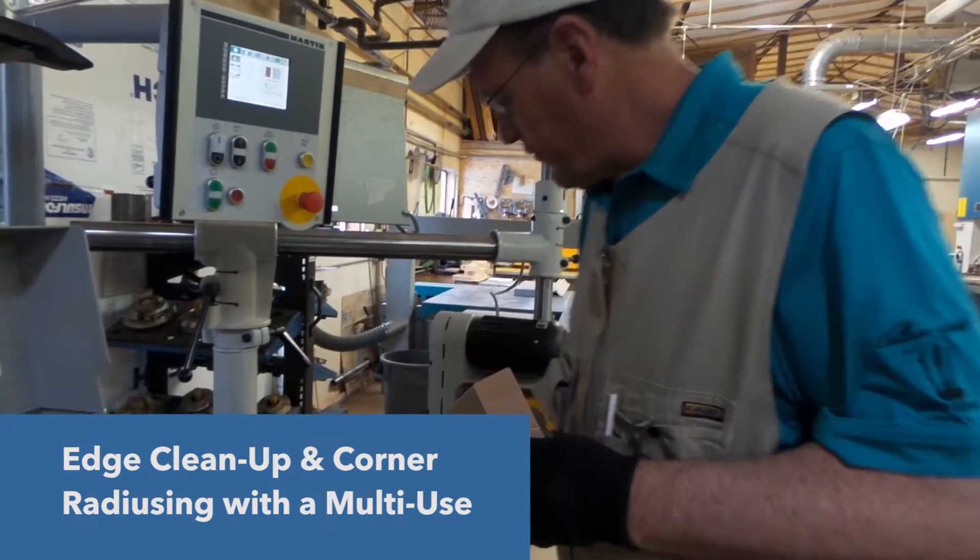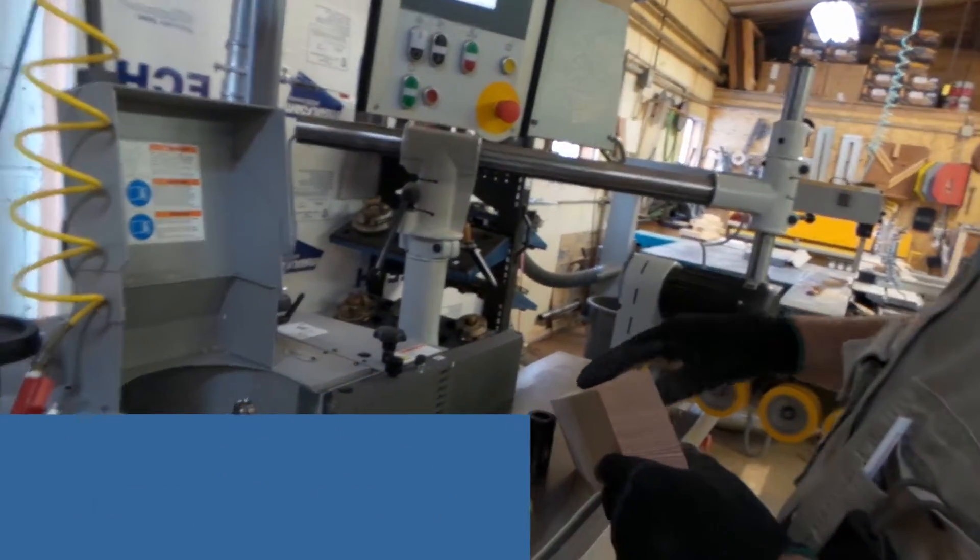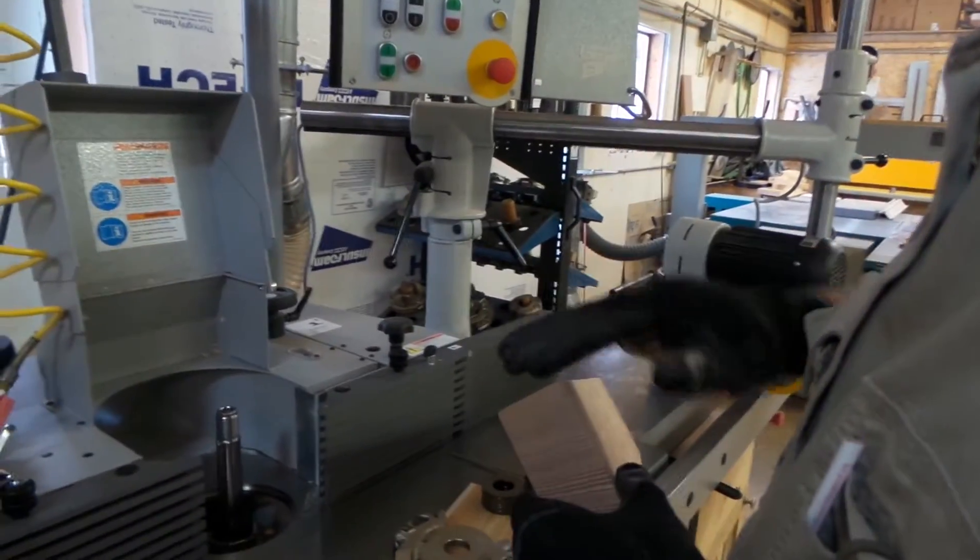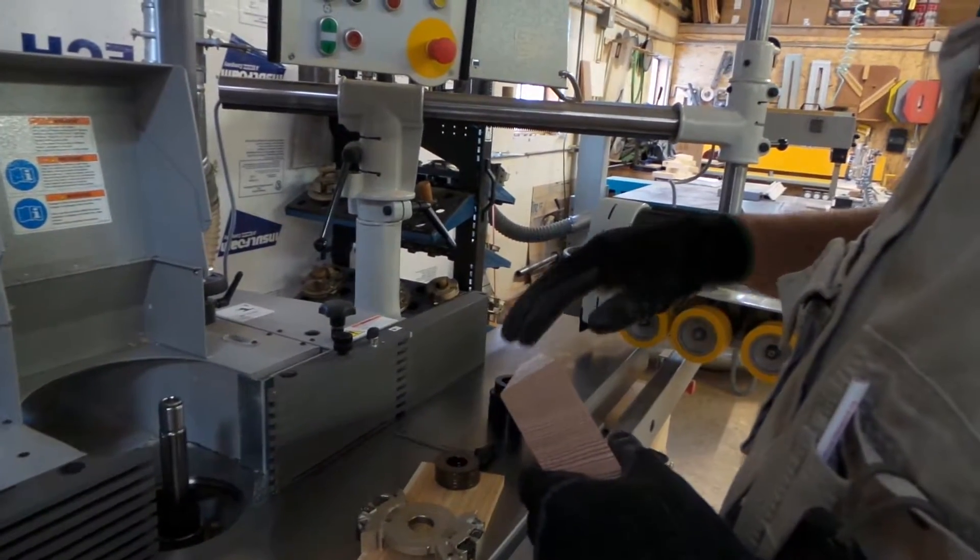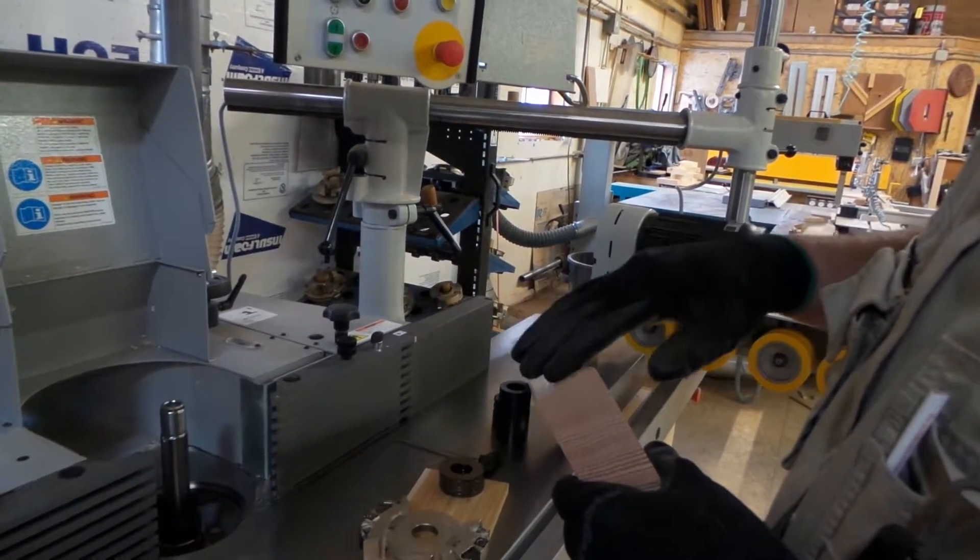The next cut we're going to do is just cleaning up the edge, putting a double radius top and bottom and removing a little bit of the edge to give it a super nice planed surface.